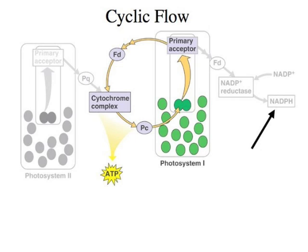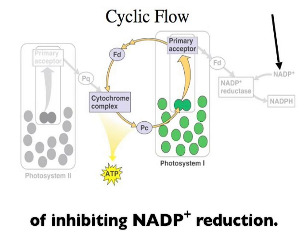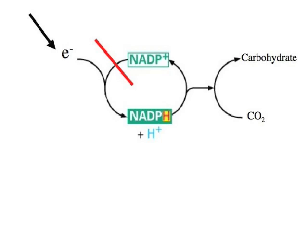Cyclic flow results from the Calvin cycle's needs when it uses less NADPH and ATP. NADPH buildup has the repercussion of inhibiting NADP+ reduction, because NADPH clogs the reductase, keeping NADP+ from moving into place. So electrons don't go to NADP+.